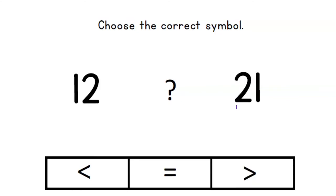Next question — choose the correct symbol. You can press pause so you can read the numbers and find the correct symbol, and when you're ready to check your answer, you can press play. Okay, welcome back. We have two numbers here and I'm looking for the correct symbol — can you point to it? Great job! 21 is the biggest number, so our mouth is open to the 21, and the sentence sounds like: 12 is less than 21.